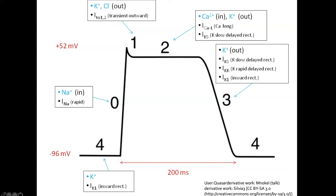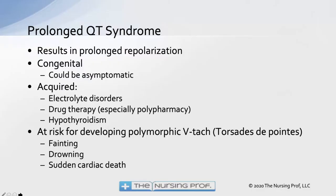As electrolyte abnormalities occur, as damage occurs to the heart, as the heart is stressed and stretched, all of those things are going to impact how this process works and whether or not we have normal depolarization and repolarization. Toward that end, let's talk about one of the syndromes they want you to know about: prolonged QT syndrome.